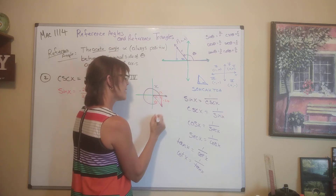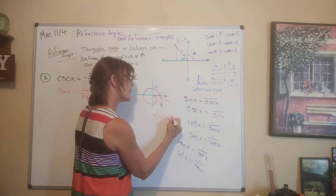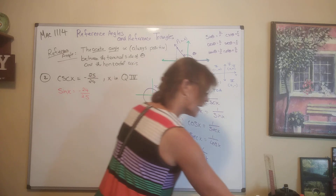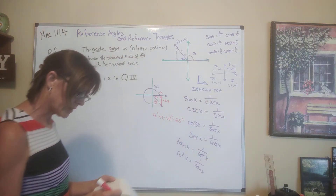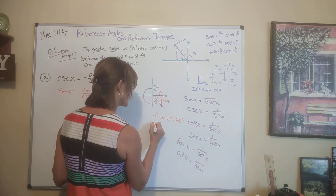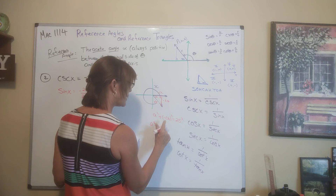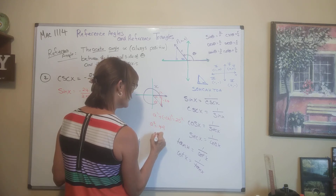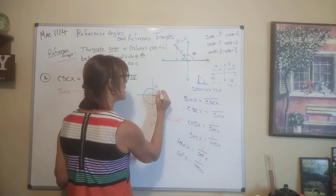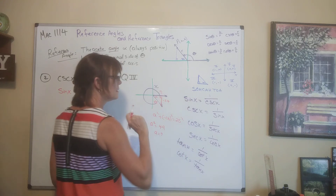Use the Pythagorean theorem: A squared plus negative 24 squared equals 25 squared. A squared equals 25 squared minus 24 squared, which gives 49, so A equals 7. A is positive because we're in quadrant 4 and we went to the right.